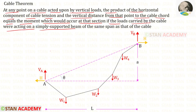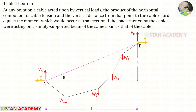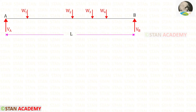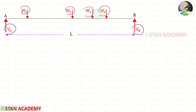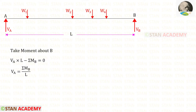Let us take a simply supported beam of the same span as that of the cable. Later we can see the meaning of this Cable Theorem. Let us take a simply supported beam having the span L. Va and Vb are the vertical reactions. W1, W2, W3, and W4 are the loads.